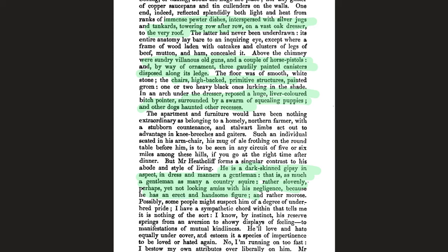Going into the sitting room, we get a description of the interior: 'immense pewter dishes interspersed with silver jugs and tankards... towering row after row on a vast oak dresser to the very roof.' That feels very medieval. The food is quite simple fare — oat cakes, clusters of legs of beef, mutton and ham. And there's a sense of violence: 'sundry villainous old guns' — that's a transferred epithet, since guns can't actually be villainous on their own — and a couple of horse pistols. So it's rugged, remote, medieval in feel, and has a sense of violence.